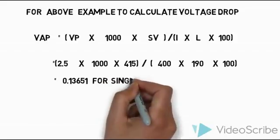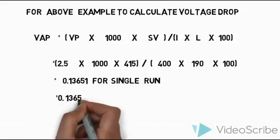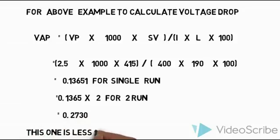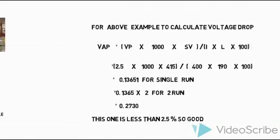This is the above data to be calculated. For single run, 0.13 percentage voltage drop has occurred. That means for 2 runs, 0.27 percentage voltage drop has occurred. So you can easily calculate for single run, after that you can multiply for how many runs - two runs means you multiply by two. Here less than 2.5 percentage voltage drop has occurred, so this is good.